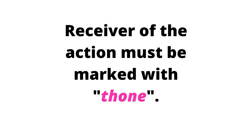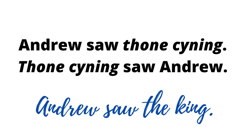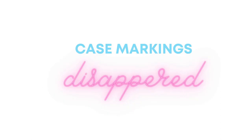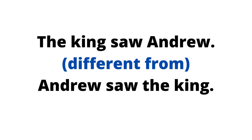In Old English, if something is the receiver of the action, you had to mark it with the word thone, and the word order could be changed. Note that the word 'kinning' was the Old English word for king. These two sentences both mean 'Andrew saw the king.' The case markings of Old English disappeared. That is why, in modern English, speakers and listeners had to rely on the order of the words — and so 'the king saw Andrew' is different from 'Andrew saw the king.'